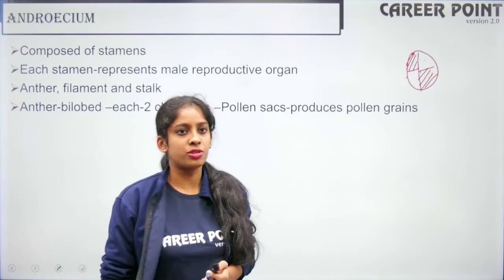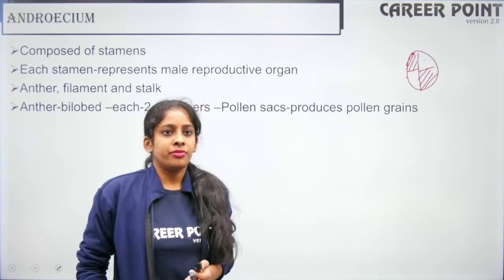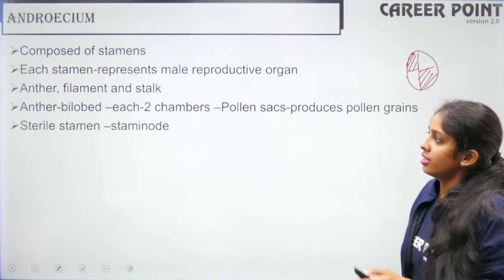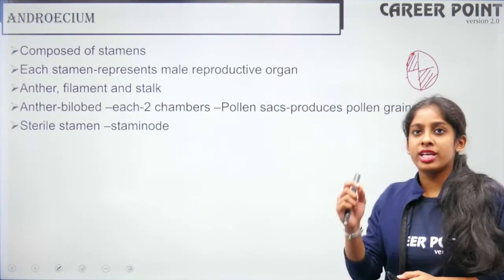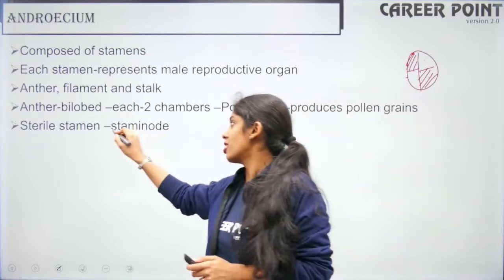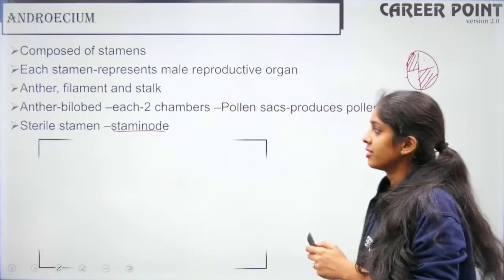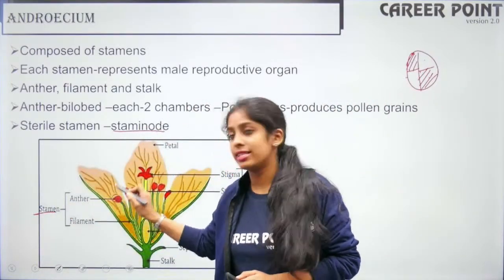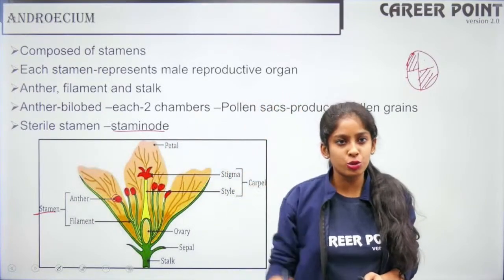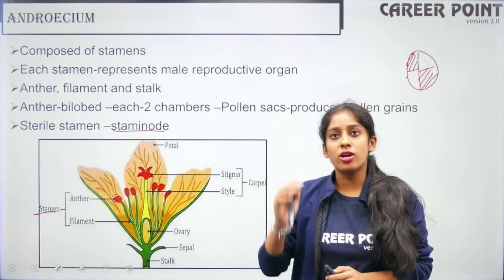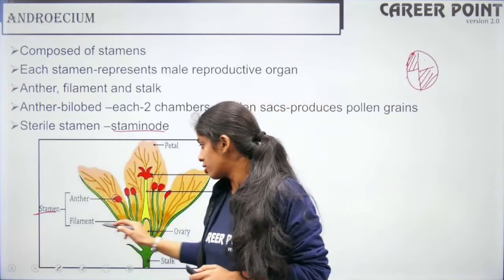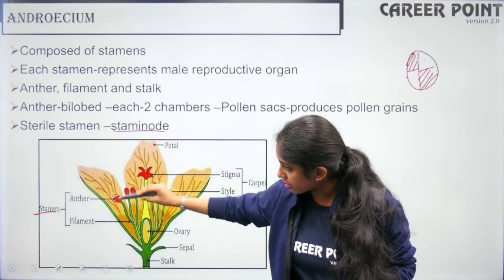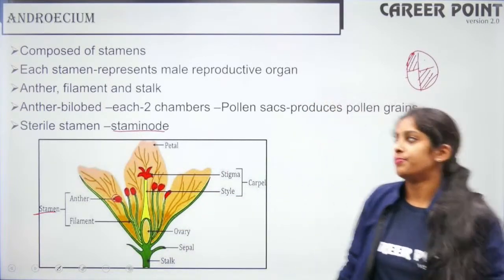When your stamen is sterile and cannot produce pollen grains it is called a staminode. The anther has two lobes each with two chambers (pollen sacs) and the pollen sacs produce pollen grains. Below the anther is the filament and the connective.